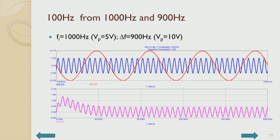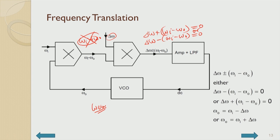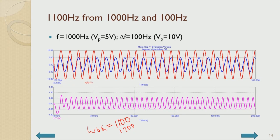That is frequency translation. This is an important loop in frequency synthesis apart from multiplication. For frequency multiplication, a divide-by-N counter is placed in the feedback path to make the VCO divide by N, yielding a frequency multiplication by M divided by N. Coupled with frequency translation, this becomes a powerful tool for exact frequency synthesis.